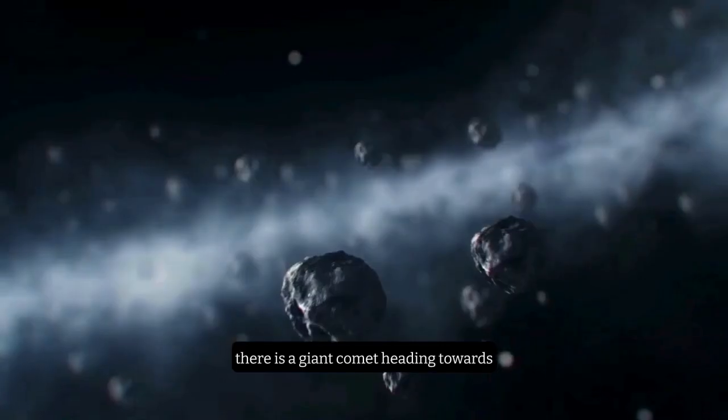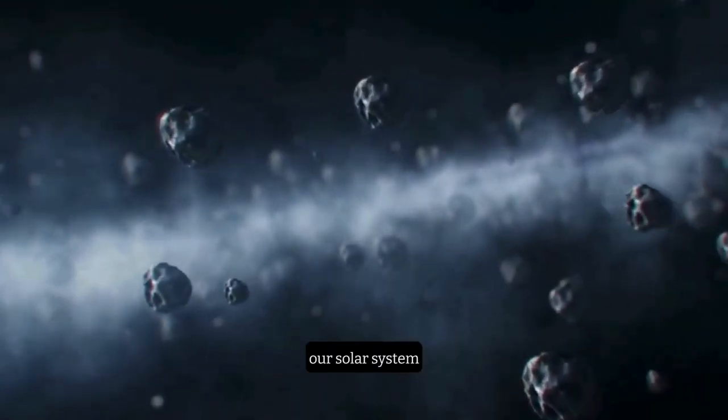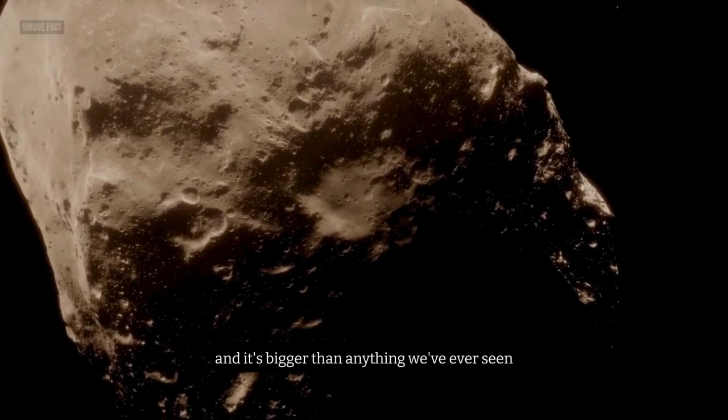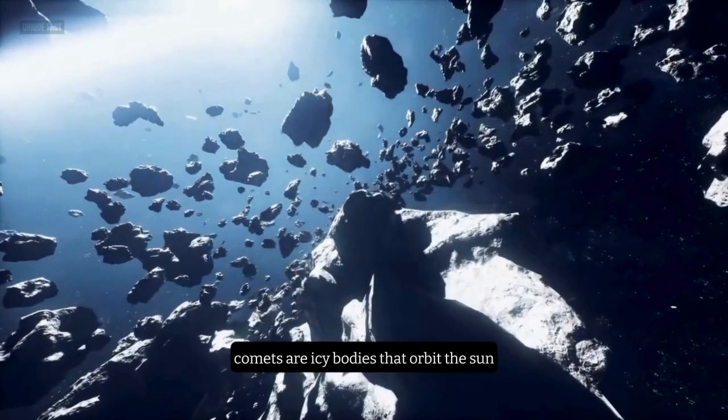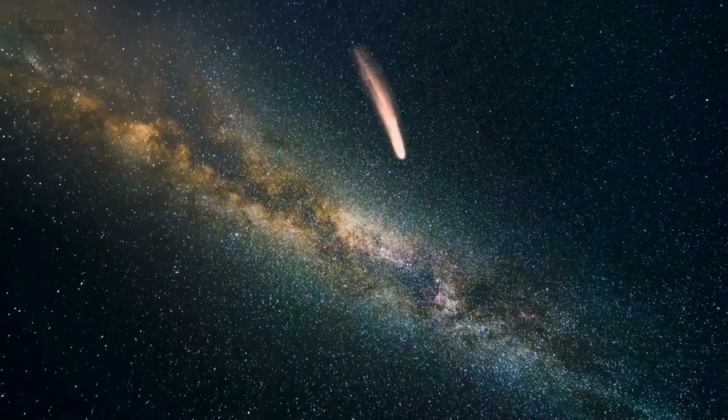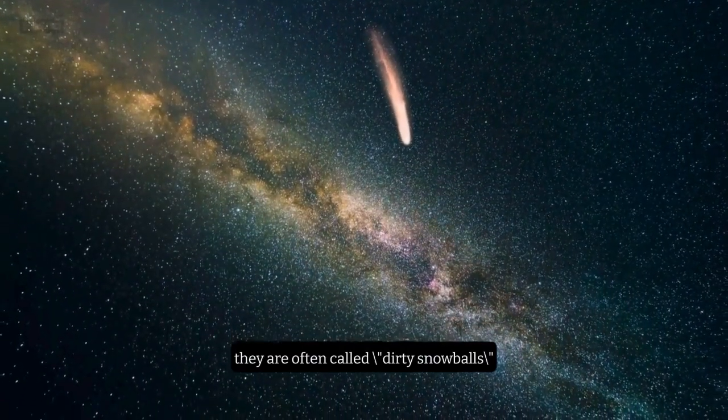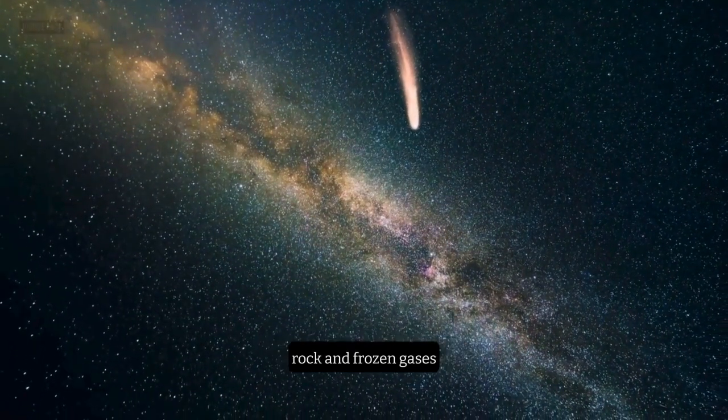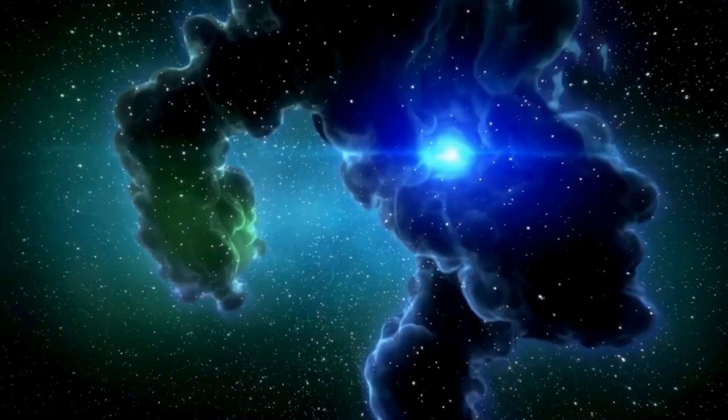Fact number 5. There is a giant comet heading towards our solar system, and it's bigger than anything we've ever seen. Comets are icy bodies that orbit the sun, usually in very long and elliptical paths. They are often called dirty snowballs because they are made of dust, rock, and frozen gases.